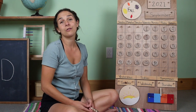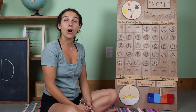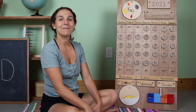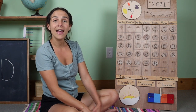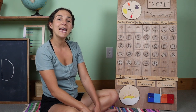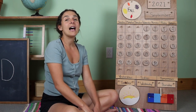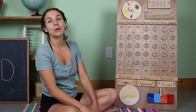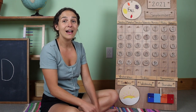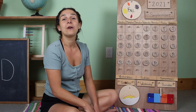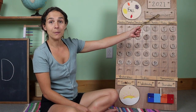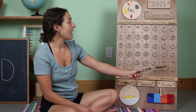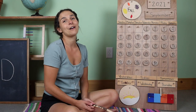Listen carefully to the words in the next song and see if you can hear what month comes after September. And if you know the words, you can sing with me. January, February, March and April, May and June, July and August, September, October, November, December — 12 months in a year. Did you hear that? The month that comes after September will be October. Tomorrow is the last day of September, and Friday will be the first day of October.